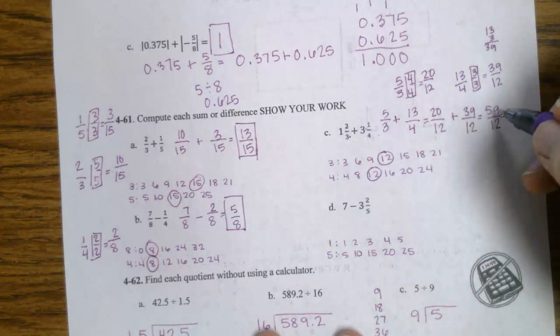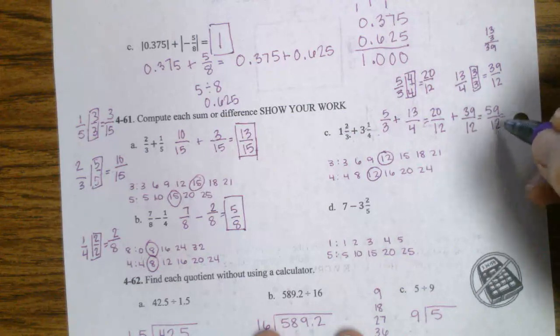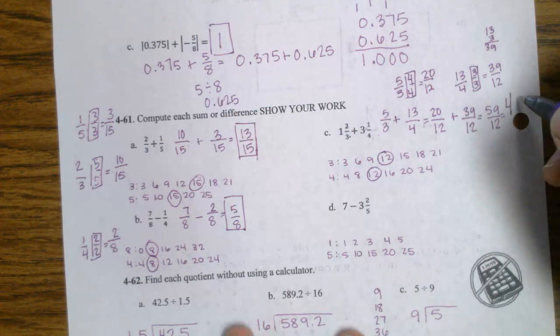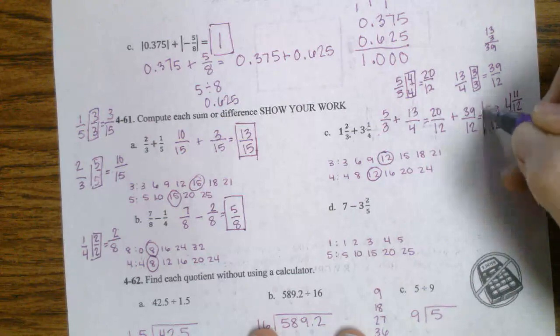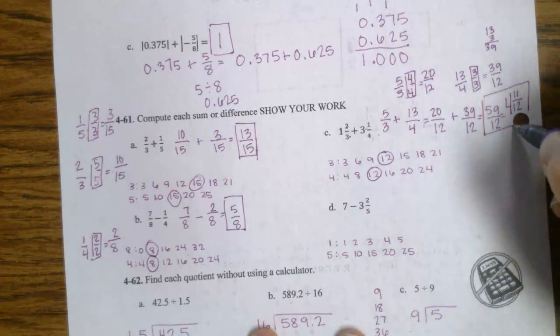I can turn it back into a mixed number. I say, well, how many times does 12 go into 59? I know it goes into 60 5 times, but it's not 60. So it has to be 4. And because I'm 1 away from 60, I know that there's 11 pieces left. So I could have either of these answers and it's right.